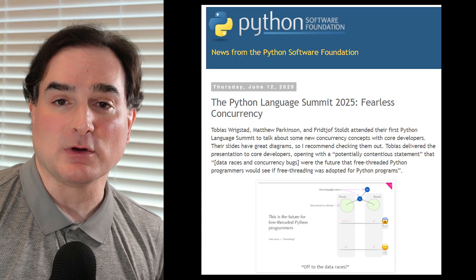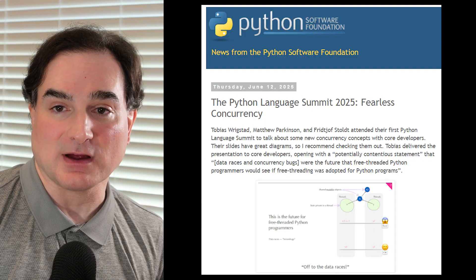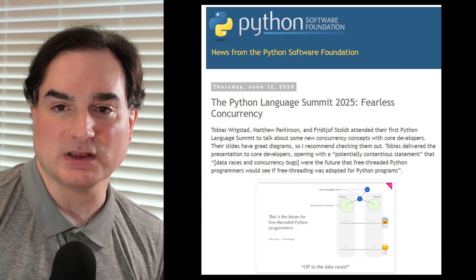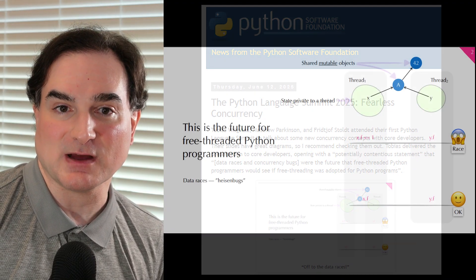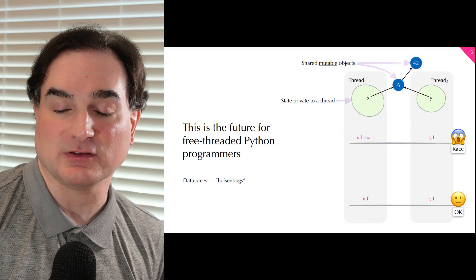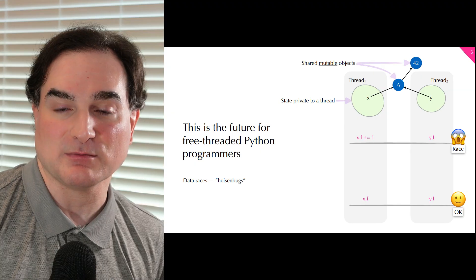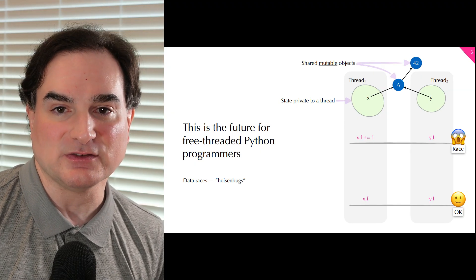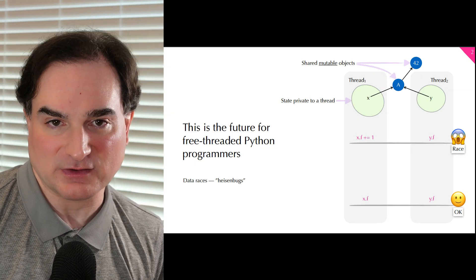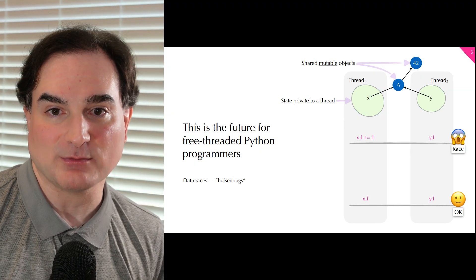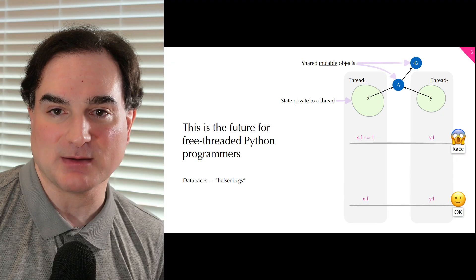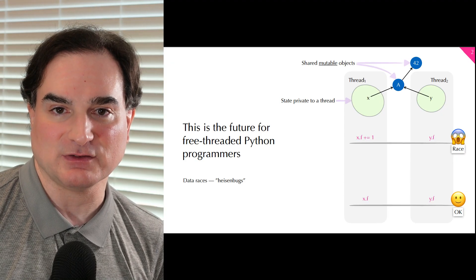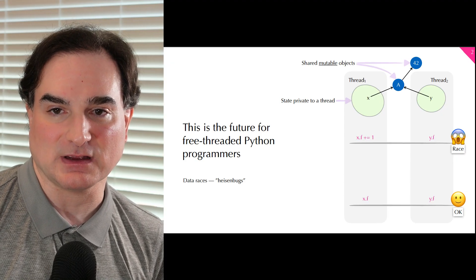One of the pitfalls of threading in Python, according to the presenters, is that you don't have good information about when an object is shared across multiple threads. It's hard to detect what are called data race conditions, where objects are modified by multiple threads in a way where the order of the modifications can't be guaranteed.